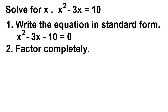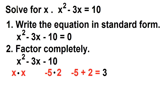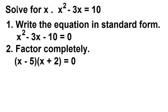Next, factor completely. Factor the polynomial on the left side: x² − 3x − 10. This is a trinomial with leading coefficient 1. Think of two numbers that give a product of −10 and a sum of −3. Those numbers are −5 and 2, so the factors are (x − 5) and (x + 2).